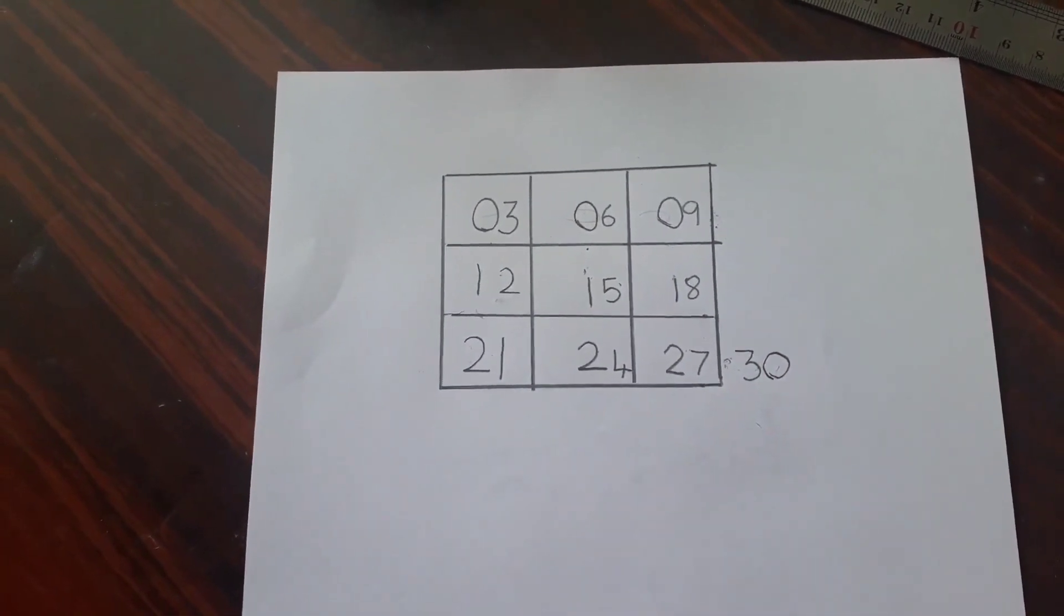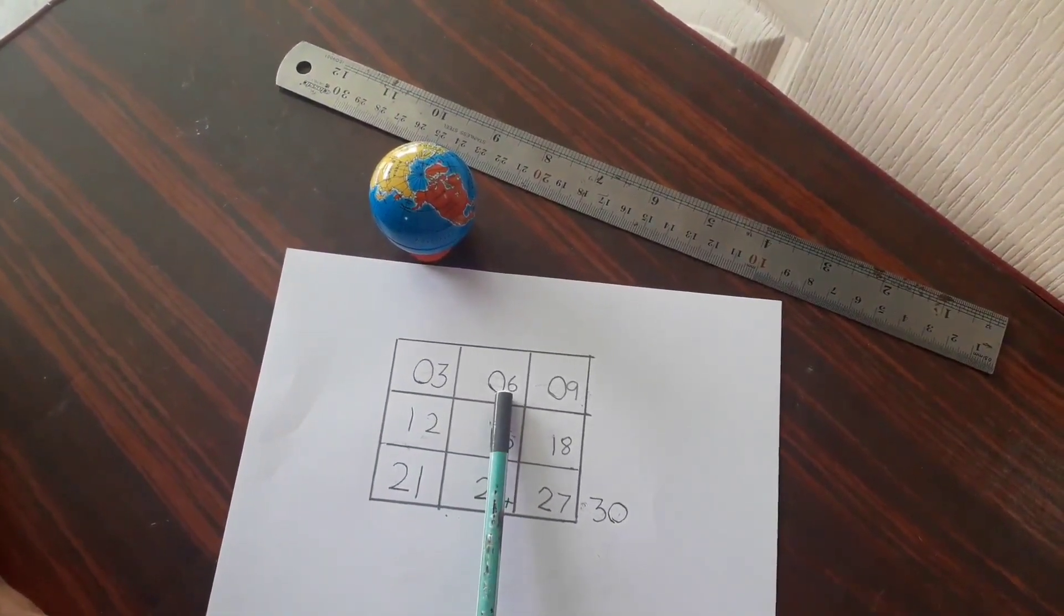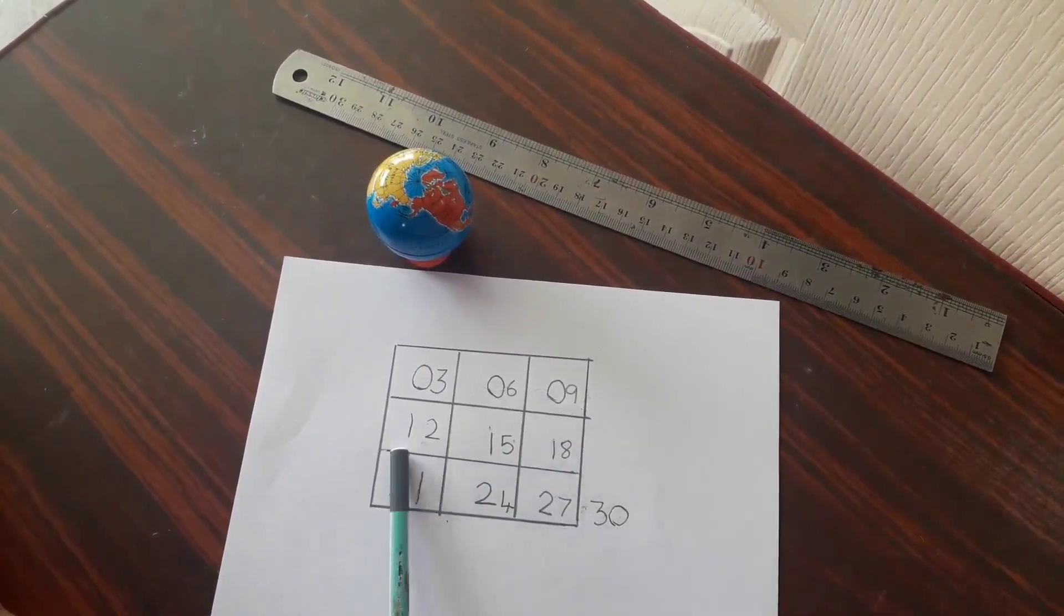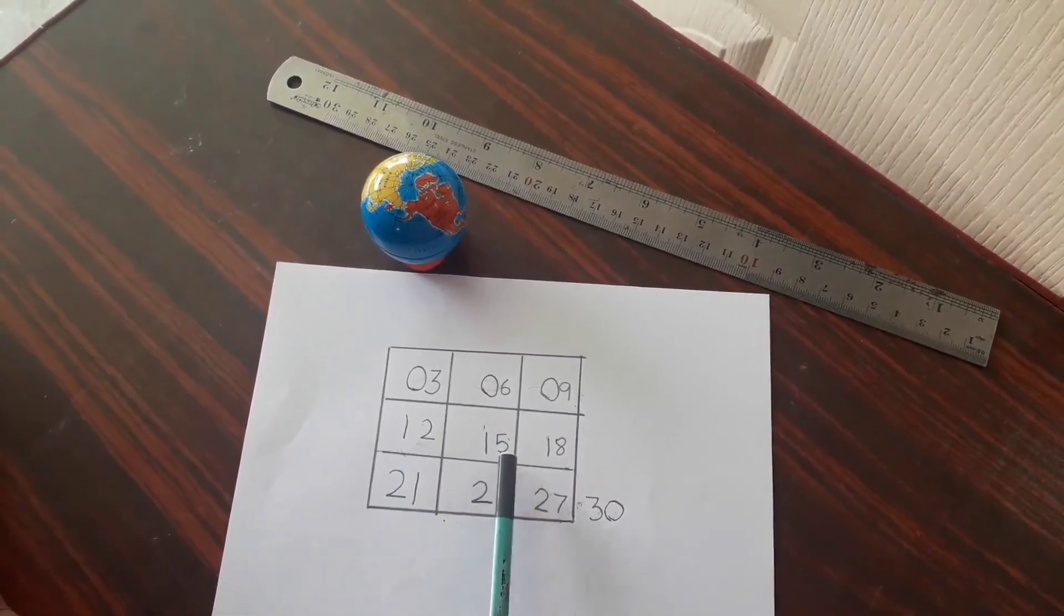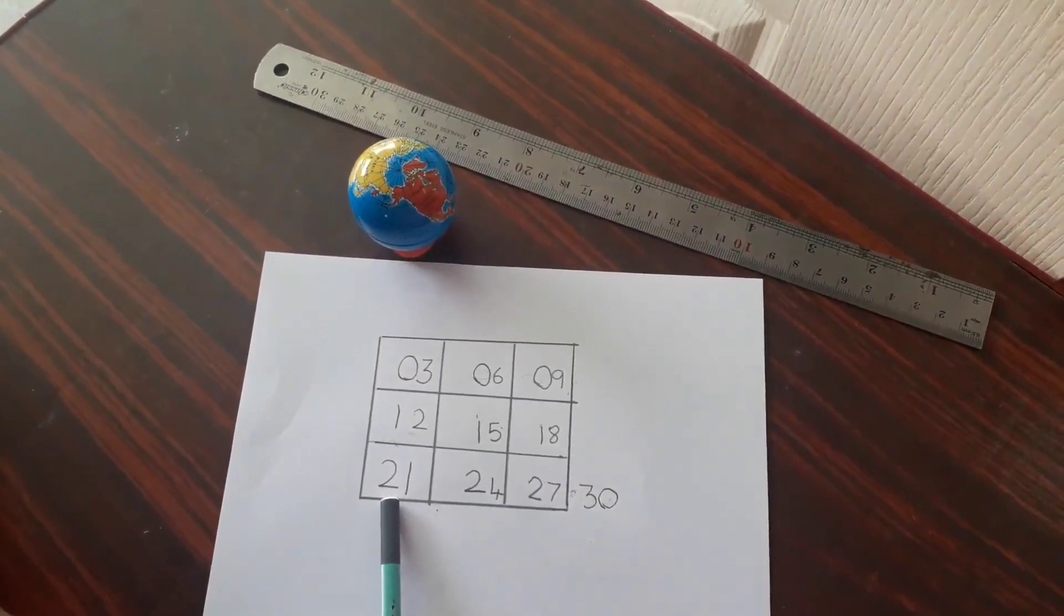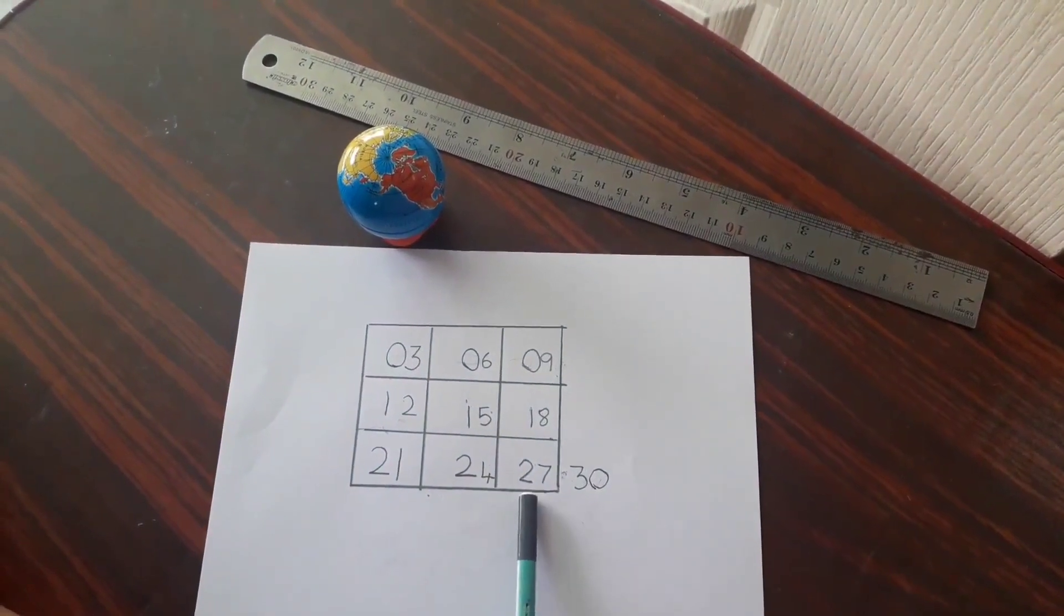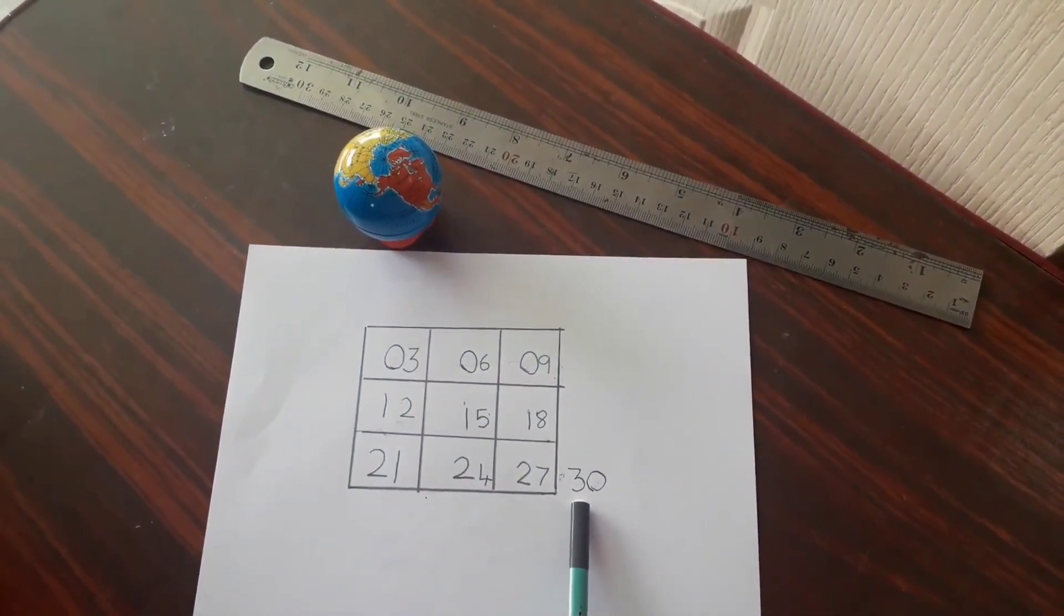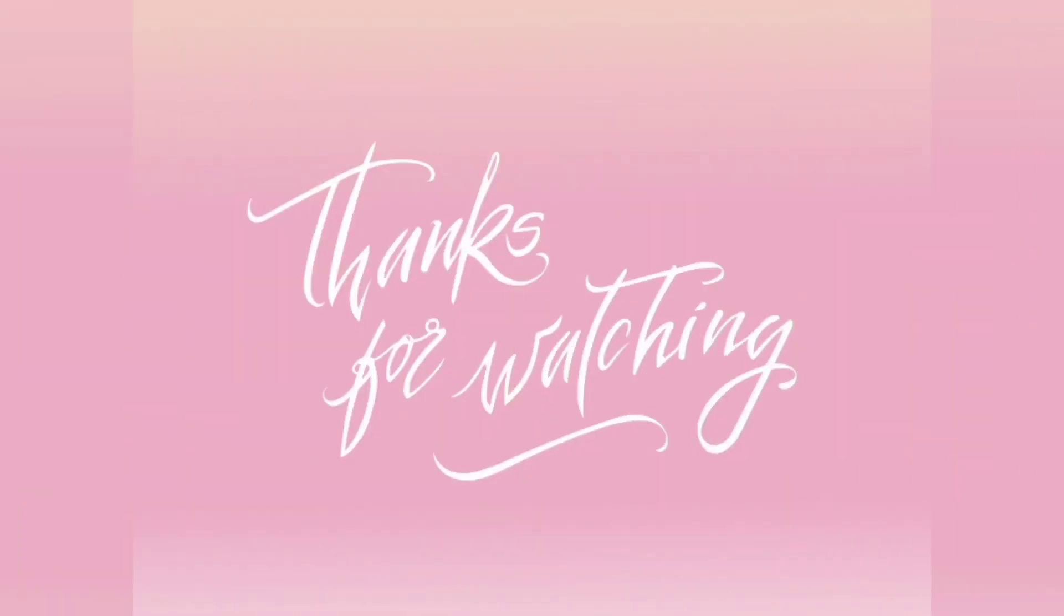Now it's finished. 3 ones are 3, 3 twos are 6, 3 threes are 9, 3 fours are 12, 3 fives are 15, 3 sixes are 18, 3 sevens are 21, 3 eights are 24, 3 nines are 27, 3 tens are 30.